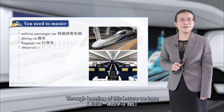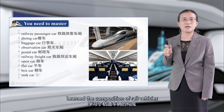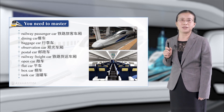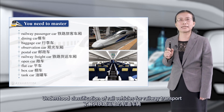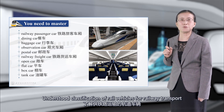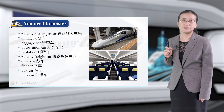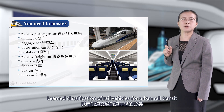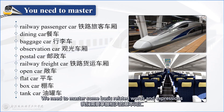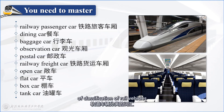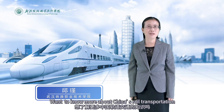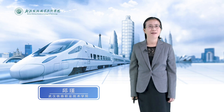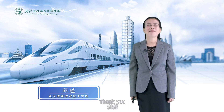Through learning of this lecture, we have learned the composition of rail vehicles. We have understood the classification of rail vehicles for railway transport, and we have learned the classification of rail vehicles for urban rail transit. We need to master some basic related words and expressions of classification of rail vehicles. Want to know more about China's rail transportation? Stay with us till next time. Thank you.